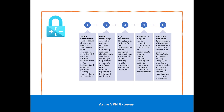Azure VPN Gateway is a networking service that provides secure cross-premises connectivity between your Azure virtual network and on-premises IT infrastructure. Key features include a secure connection and hybrid networking — Azure VPN Gateway facilitates hybrid networking scenarios which allow you to connect on-premises networks to your Azure virtual network.